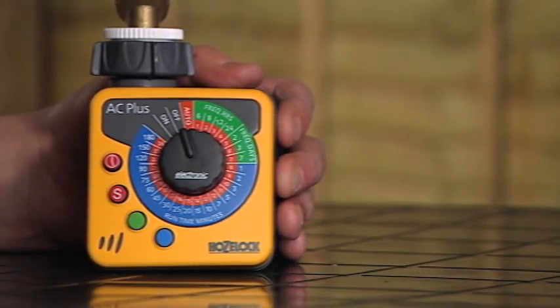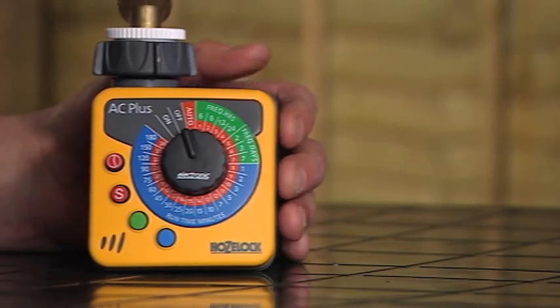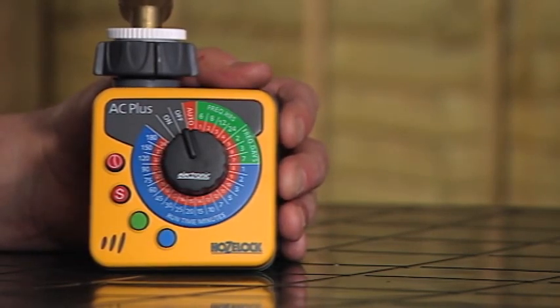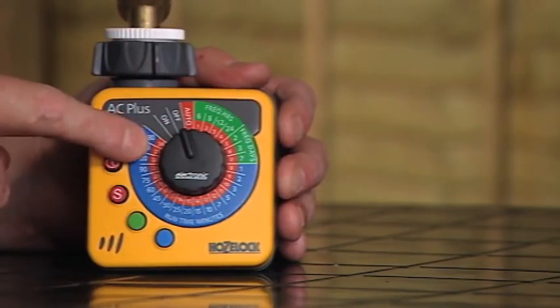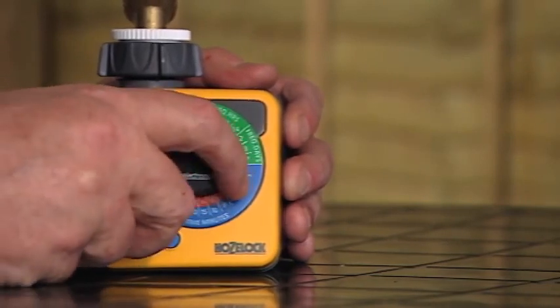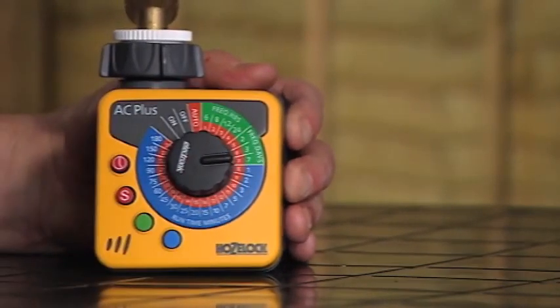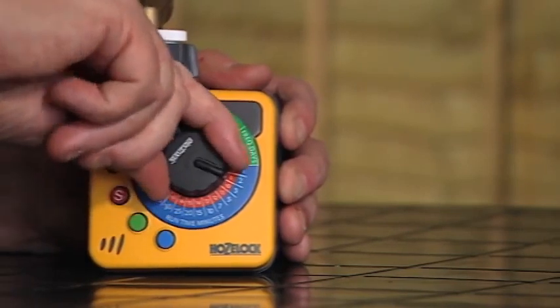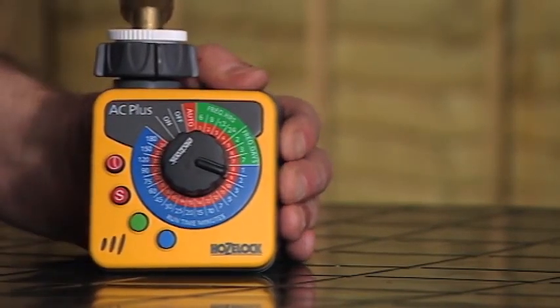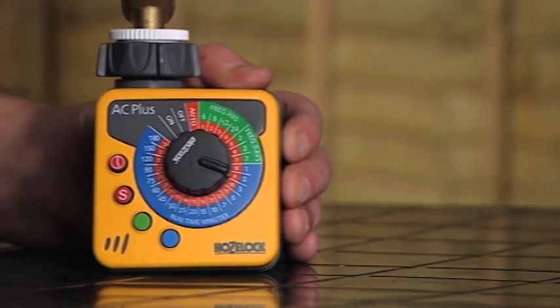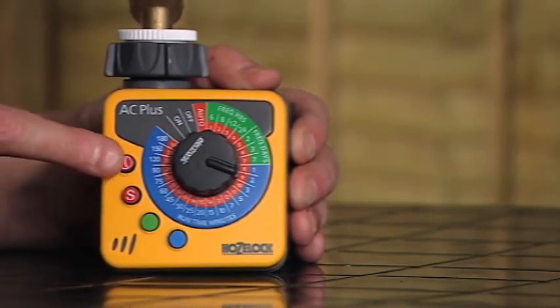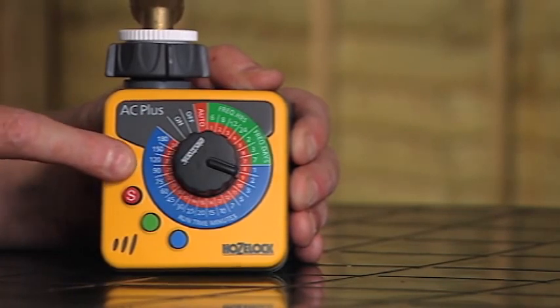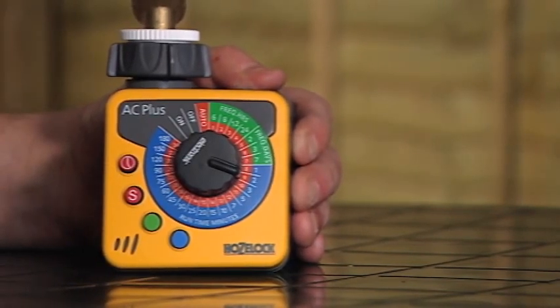So the first thing we have to do is tell the computer what the current time of day it is. So let's just say it's nine o'clock in the morning at the moment. We turn the dial on and refer to the central red dial which is a 24 hour clock and we've set that to the nine o'clock position. When we've done that we then press the clock button which is the very button at the top and you should hear a beep just to confirm that that's been selected.